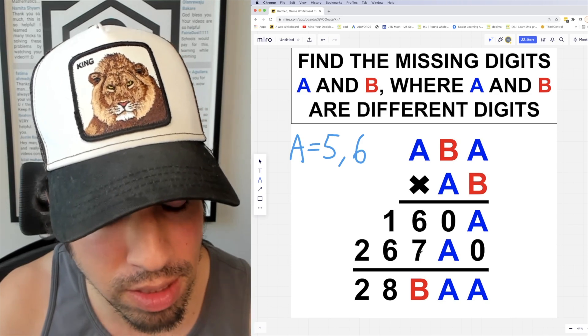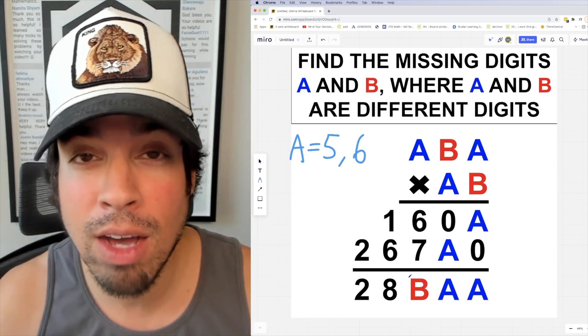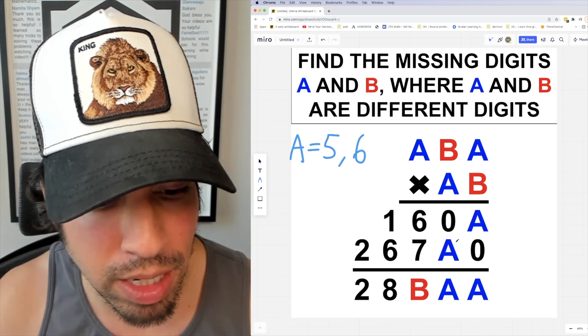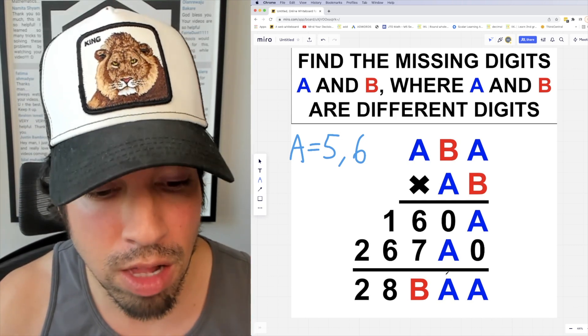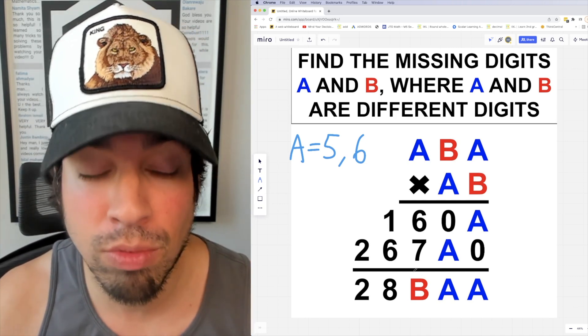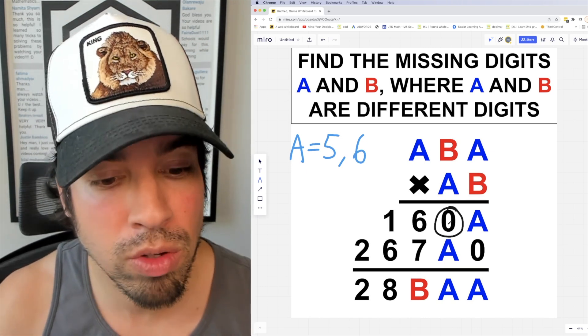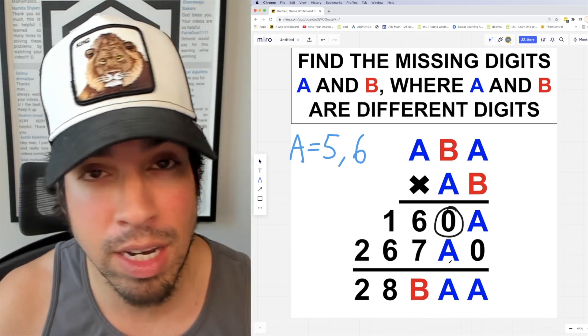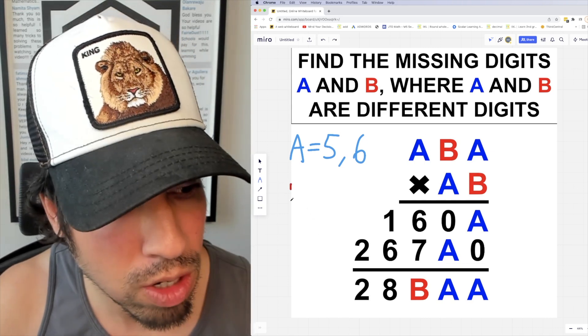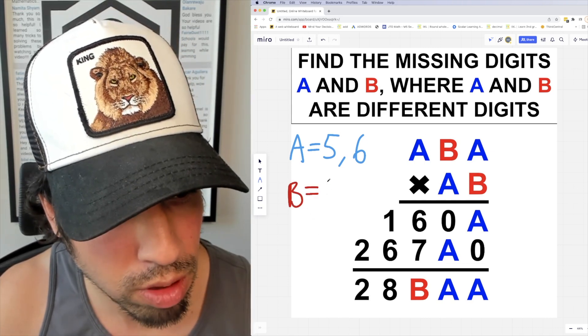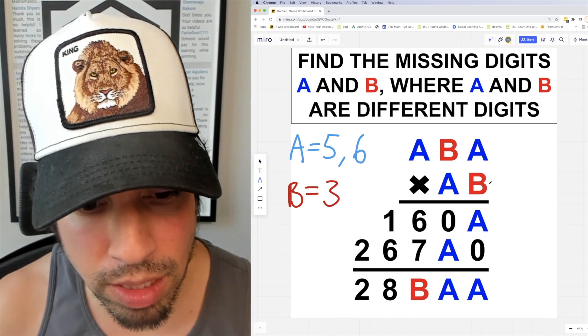Now, six plus seven could be 13, but there theoretically could be a carry from the previous column of addition, which means B could be three or four. But since we know this top digit here is zero, we know that zero plus A cannot have a carry, even if A is nine. This means that we definitively know that B has to equal three.